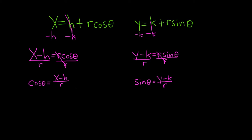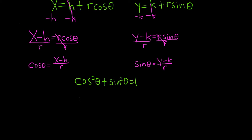So now that we've solved for the trig functions, we use a familiar identity. Recall that cosine squared of theta plus sine squared of theta is equal to 1. So now we just plug everything in. So our cosine is x minus h over r. So it'll be x minus h over r quantity squared plus our sine of theta is y minus k over r. So it'll be y minus k over r quantity squared. And that's equal to 1.